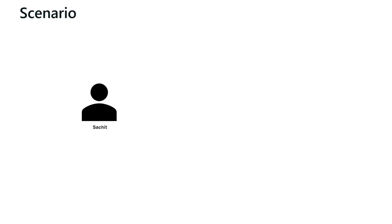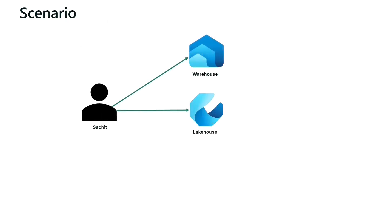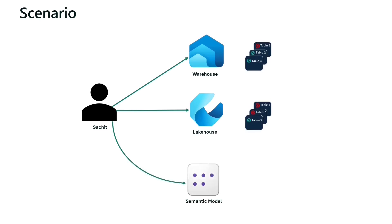Suppose you have a user Sachit who needs to run SQL queries against data stored in lake house and data warehouse, but he should be able to access only limited tables, not all the tables of the lake house and data warehouse. Similarly, when sharing a semantic model item with him, he should not be able to read or use all the tables of the semantic model — probably just one table from the semantic model, which may have more than one table. To explore this scenario in the demo, let's switch to the fabric portal where I have logged in as admin user.